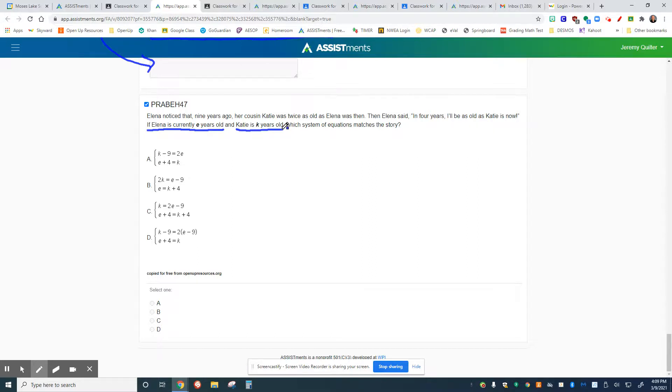Elena noticed that nine years ago, nine years ago, seems like that, her cousin Katie was twice as old as Elena was. Interesting. Is that right? I don't know. I want you to play with it. Figure out which one is which. Make sure that it works out.